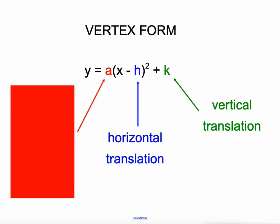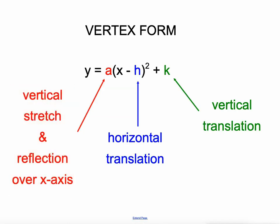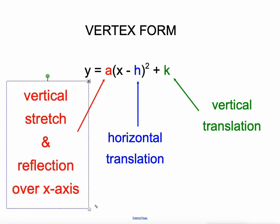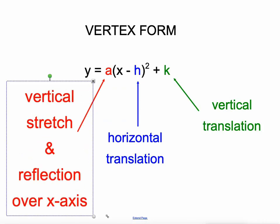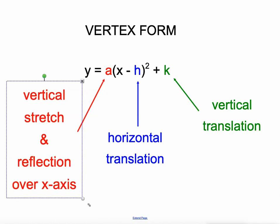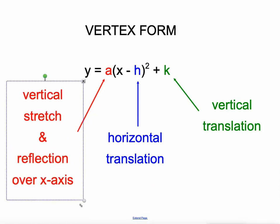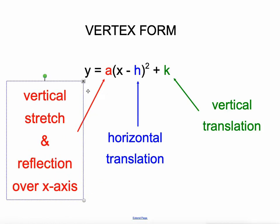And this A value here, which actually doesn't show up too much in this IXL skill — it's the vertical stretch. It's not a proportion where it's made bigger both horizontally and vertically; it's a vertical stretch, just stretched up and down. Or if it's a negative A value, it means the parabola has been reflected over the x-axis.